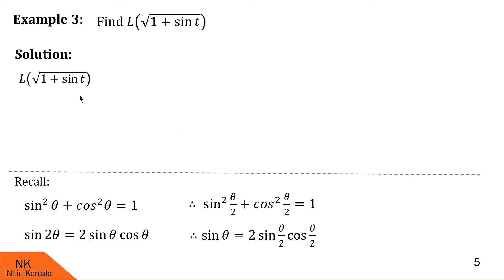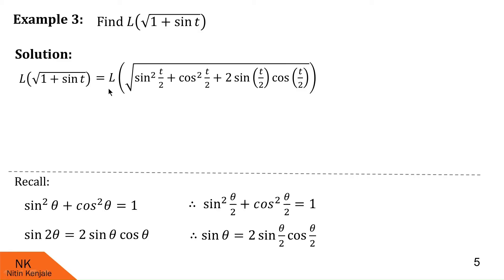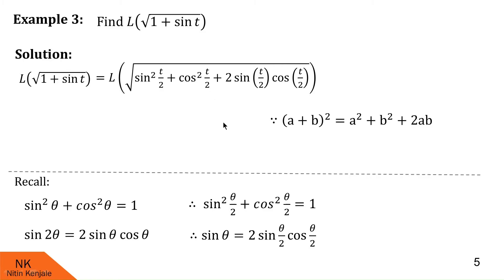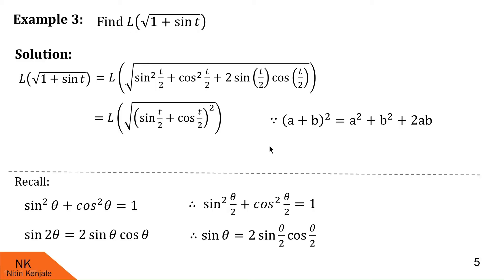Applying these identities, Laplace of √(1 + sint) becomes Laplace of √[sin²(t/2) + cos²(t/2) + 2sin(t/2)cos(t/2)]. Together these three terms form (a+b)², where a = sin(t/2) and b = cos(t/2), so this becomes √[(sin(t/2) + cos(t/2))²]. The square root and square cancel, leaving Laplace of [sin(t/2) + cos(t/2)].